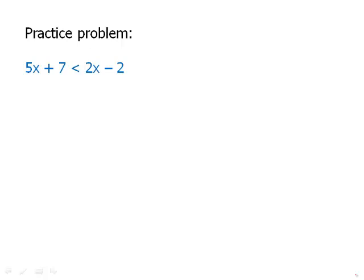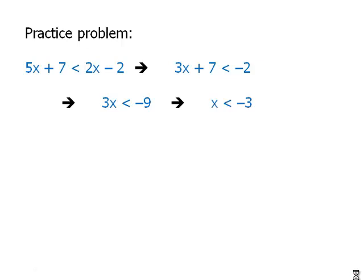Here's a practice problem. We want to get X by itself, much the same way as with equations. First, collect all the X's on one side by subtracting 2X from both sides, giving 3X. Then subtract 7 from both sides. Finally, divide by positive 3 — since we're dividing by a positive number, it's just like an equation and the inequality direction stays the same. We get X < −3.